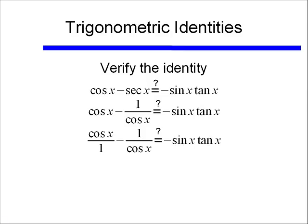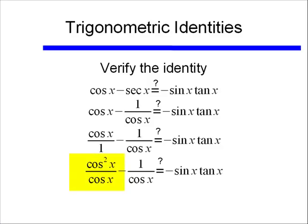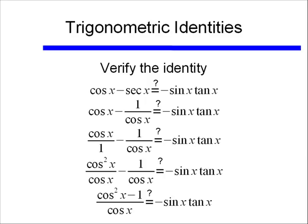So again if I have one fraction, I make everything fractions so I can clearly see what's going on. My LCD will be cosine x, so I'll rewrite cosine x over 1 as cosine squared x over cosine x. I've multiplied the numerator and denominator by cosine x. Now I can go ahead and do the subtraction of my numerators, and I end up with cosine squared x minus 1 over cosine x.